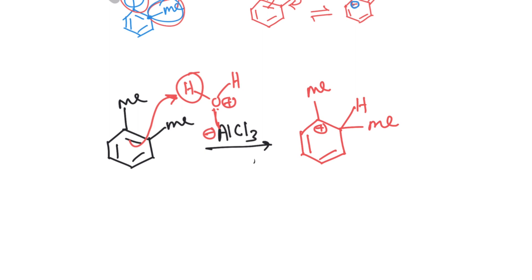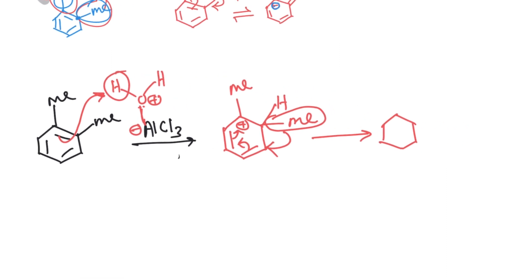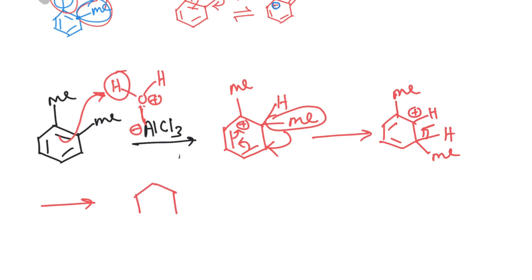From here, you can see this methyl group can shift over here, and this is how the pi network rearranges itself. So you will have the proton here, the methyl group here, and the positive charge here. This is basically our rearrangement. Now this proton will be lost to restore aromaticity.